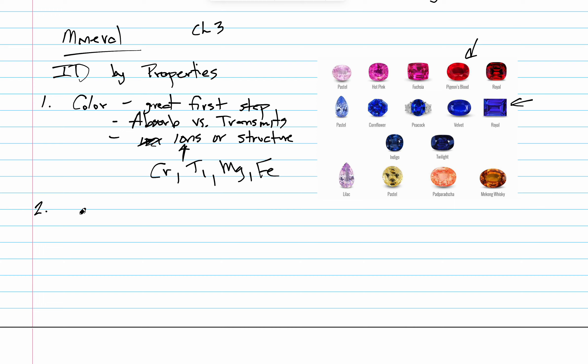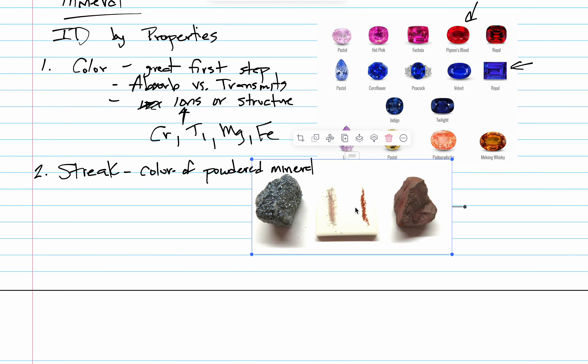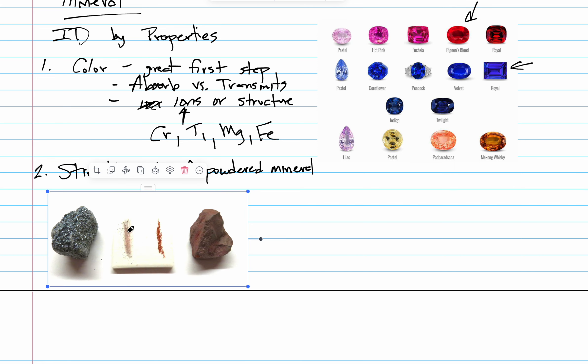The next property that I would like to introduce to you is streak. Now streak is also color, but it's the color of the powdered mineral. It's the color of powdered mineral. And when you powder a mineral to a very fine powder, you actually get rid of a lot of that structural information. And so you can perceive a different color than what you see when something is full and in bulk.